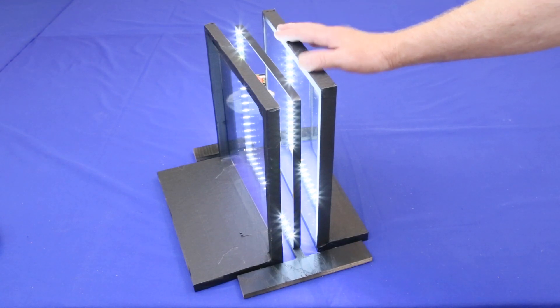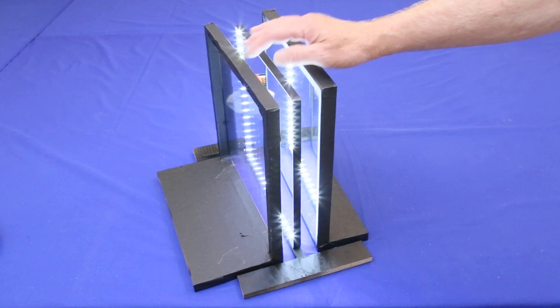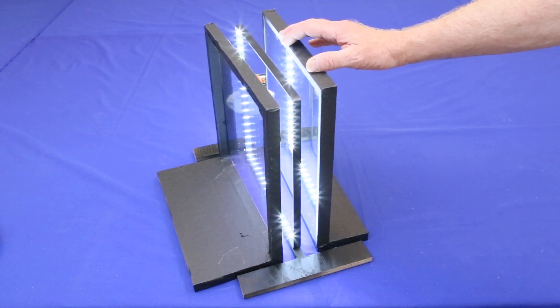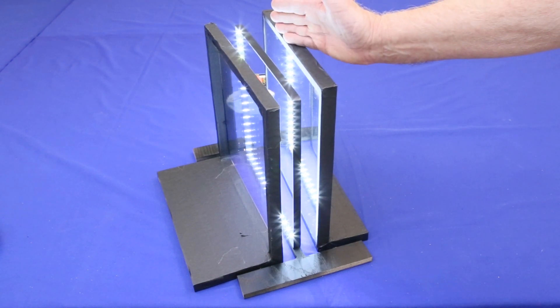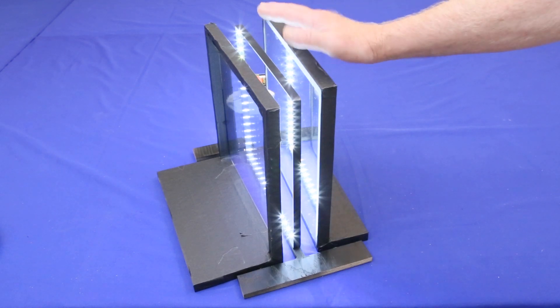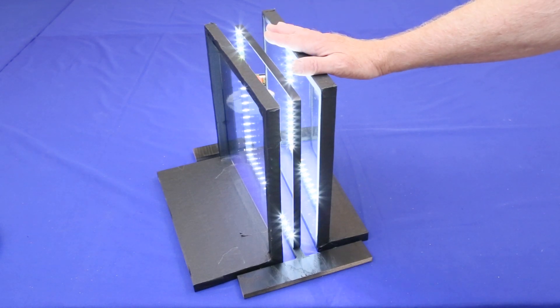To explore them, I built this deconstructed infinity mirror where the front reflector, light ring, and back reflector aren't connected. This lets them be moved relative to each other to see how doing so changes the reflections' appearances.